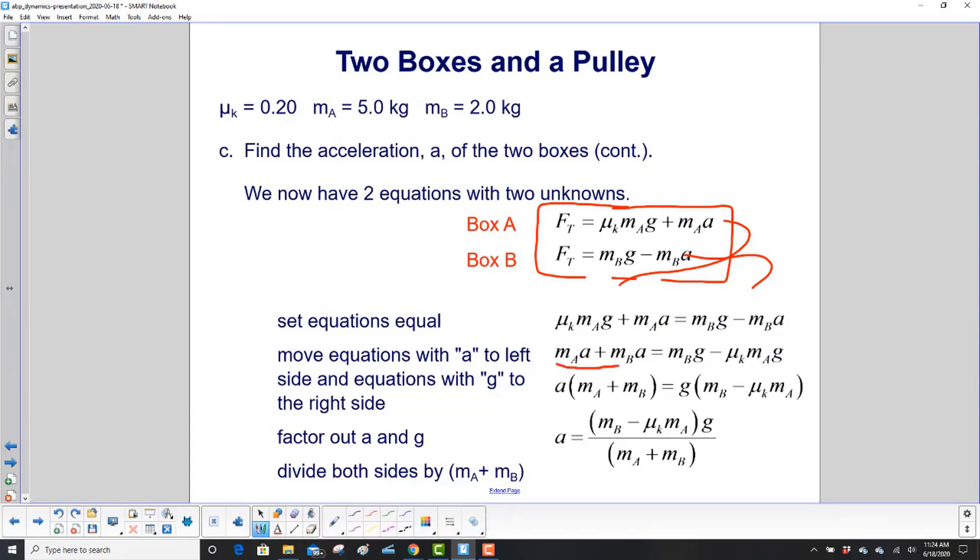And the next step will be to factor out an A on the left side. So we have A times M sub A plus M sub B. On the left side, we factor out a G. So we have M sub B minus mu K M sub A.